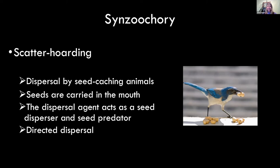Directed dispersal is when birds take seeds to microsites that are beneficial for the plant — beneficial for seedling germination. Specific birds will have specific microsites, like under a shrub or out in the open. For some plants it's better to be under a shrub because they need a nurse plant, while other plants benefit from being cached in the open. When you have a mixed disperser assemblage between birds and rodents, it's actually probably better for the plant because they place seeds in different microsites.